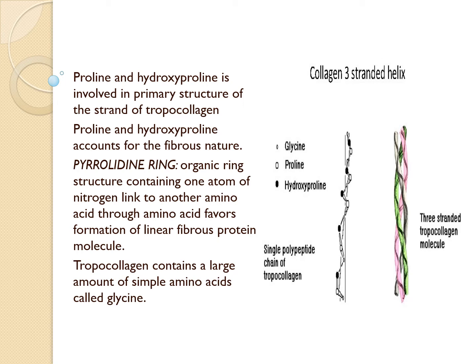The pyrrolidine ring is an organic ring structure that contains one atom of nitrogen which is linked to another amino acid. This amino acid favors the formation of a linear fibrous protein molecule. Another unique aspect of the chemical composition of tropocollagen is that it contains a large amount of the extremely simple amino acid, which is glycine.